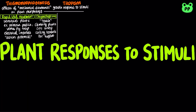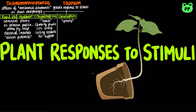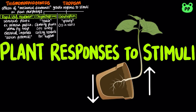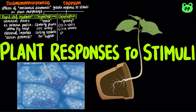Gravitropism refers to a plant's growth response to gravity. Roots show positive gravitropism whereas shoots show negative gravitropism. Plants may detect gravity by the settling of statoliths, which are specialized plastids containing dense starch grains.